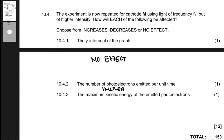Question 10.4.3 asks about the maximum kinetic energy of the photoelectrons emitted. Intensity does not affect EK max — intensity only affects the number of photoelectrons emitted. To affect EK max you need to increase the frequency or use a material with a lower threshold frequency. Therefore, intensity has no effect on the maximum kinetic energy of emitted photoelectrons.